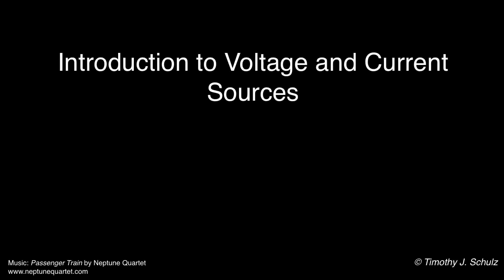In this lecture, we'll introduce some basic circuit elements that are commonly used to control the voltage and current in electric circuits. We'll review the symbols that are typically used to represent these elements in circuit diagrams, and we'll show how to use conservation of power to solve for an unknown current or voltage in a simple circuit that contains these elements.